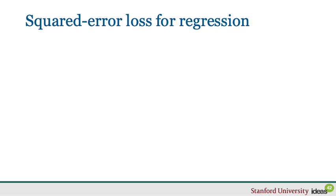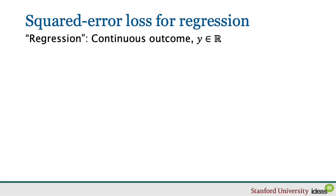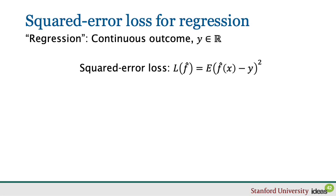Two standard versions of this prediction problem come to mind. The first, called regression, is when the outcome variable itself is continuous. A standard loss function is squared error loss, where our goal is to minimize the average squared difference between our prediction and the true label on new instances drawn from the same distribution. In other words, the loss function is simply y-hat minus y, squared.